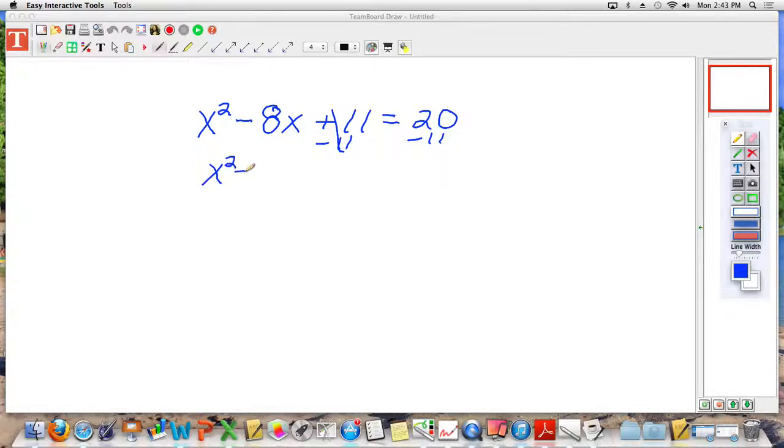So we have x squared minus 8x, leave your space, equals, now we have, it used to be 0 minus 11, now it's 20 minus 11. What is 20 minus 11? 9. Make your perfect square. Take negative 8, divide it by 2, that should be coming second nature to you now. Negative 4. Now you have to square negative 4. Negative 4 squared is what? 16. Positive 16. All right, that means I add 16, but I can't just add it to one side. I must add it to the other side.